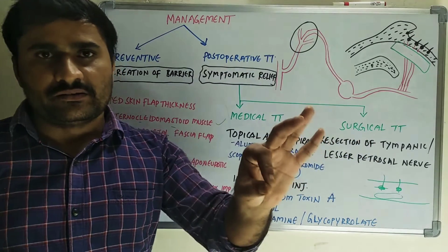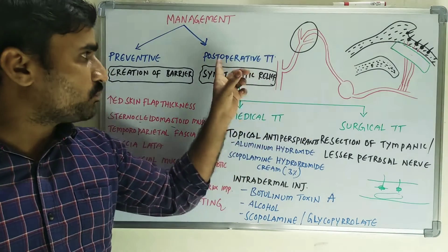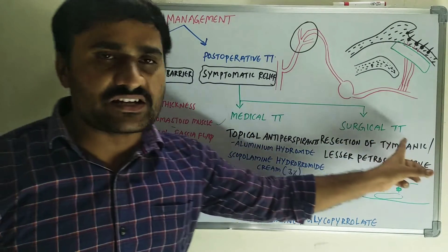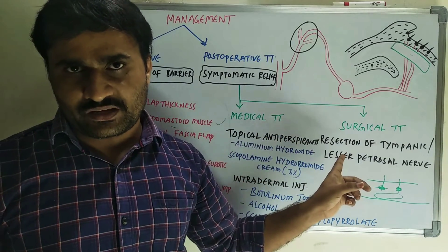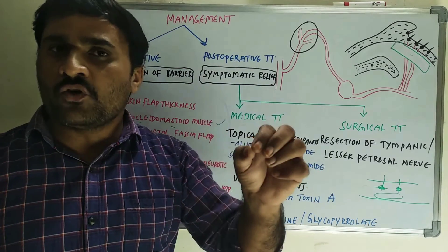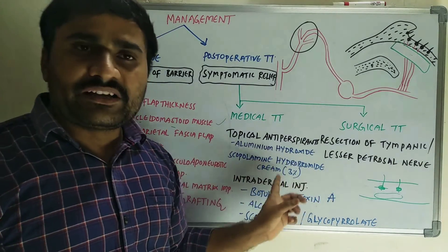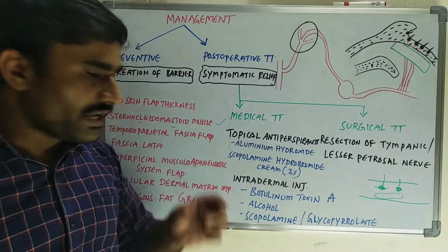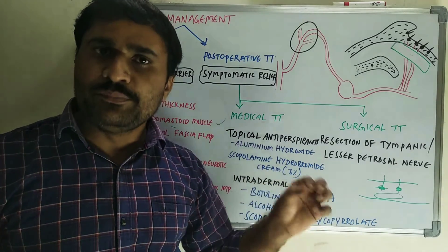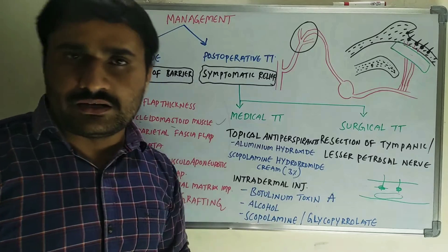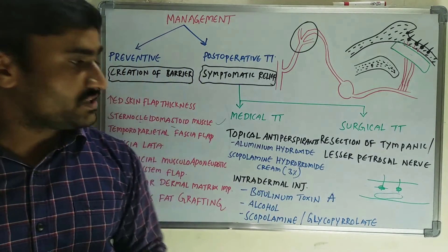If Frey's syndrome has occurred, postoperative treatment is for symptomatic relief. Medical treatment has two modalities: topical antiperspirants containing aluminum hydroxide, or topical anticholinergic drugs like scopolamine hydrobromide cream 3%. You can also go for intradermal injections — most commonly botulinum toxin type A (BTA) injections — or alcohol injections, or injections of anticholinergic drugs scopolamine or glycopyrrolate.